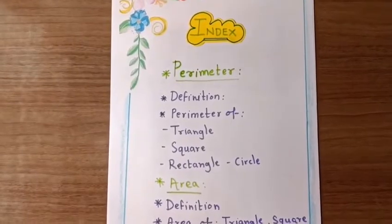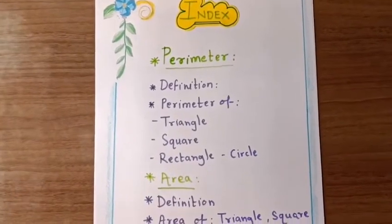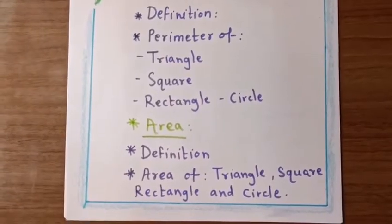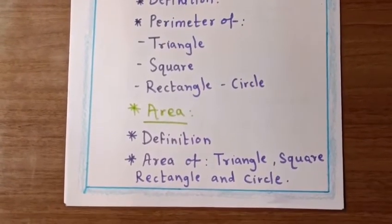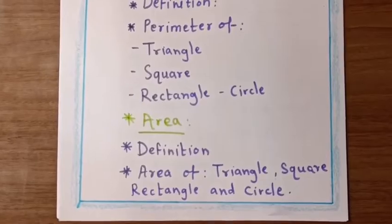triangle, square, rectangle, and circle. Then area, its definition, area of triangle, square, rectangle, and circle.